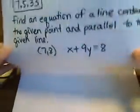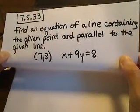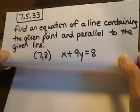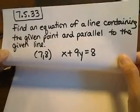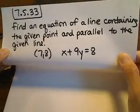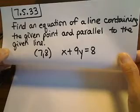Alright, so here's another question that was asked over email. The question is out of section 7.5, and the problem is 7.5.33. They want you to find an equation of a line containing the given point and parallel to the given line. So they give you the point 7,8, and then the line x plus 9y equals 8.